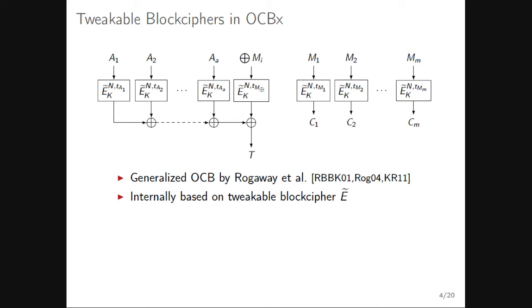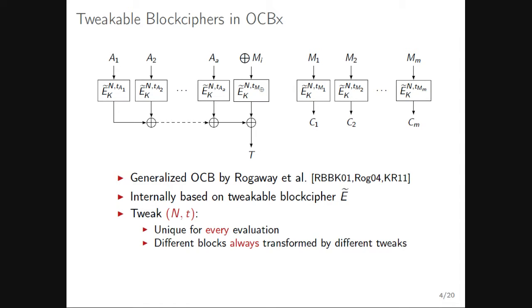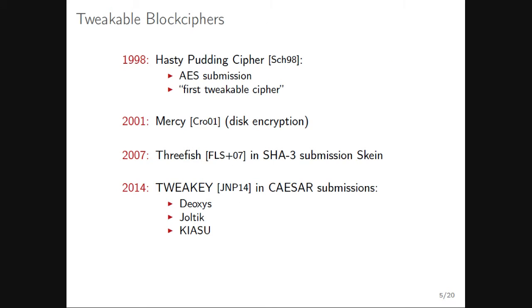I'll show how these two concepts fit together using the OCB block cipher family, introduced by Rogaway. Looking at the first block, it is basically a tweakable block cipher where the tweak is composed of the nonce n and a value that depends on the position of the input block. Each input block is transformed with a different tweak, so we want the tweak change to be very efficient.